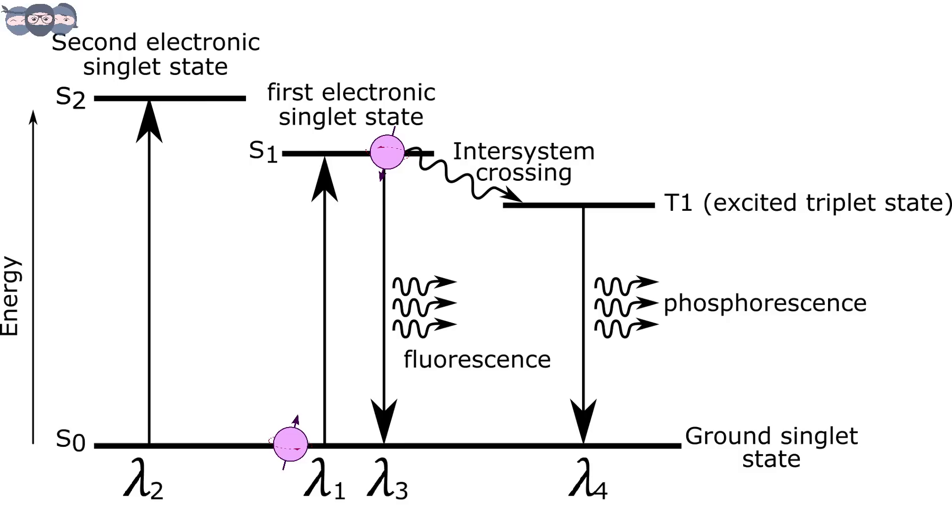Sometimes, electrons instead of transitioning from first electronic singlet state to ground state go to first excited triplet state.